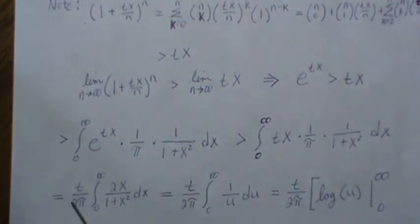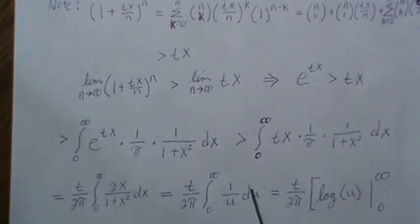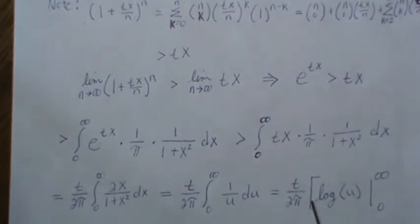We multiply by two and divide by two. The reason we do that is we can do a u-substitution and this becomes 1/u du. Constants stay the same, we're still integrating zero to infinity. The anti-derivative is log(u). Now we evaluate it at these limits.